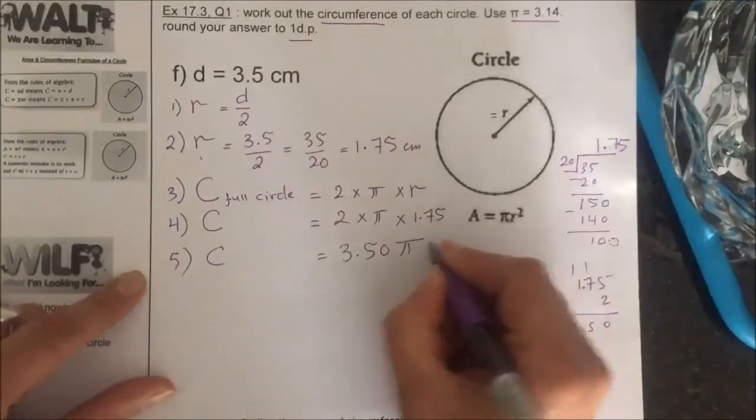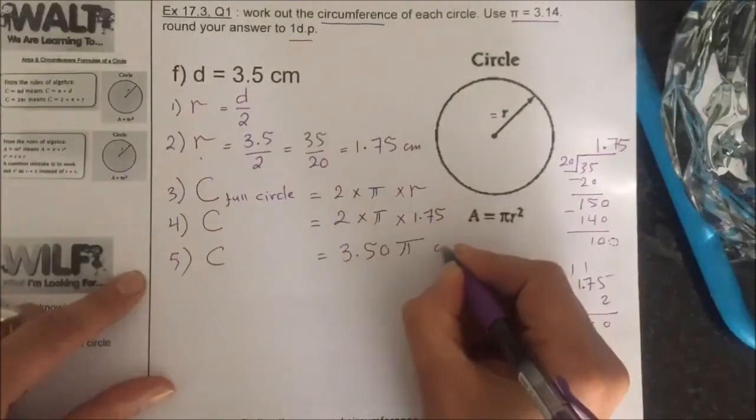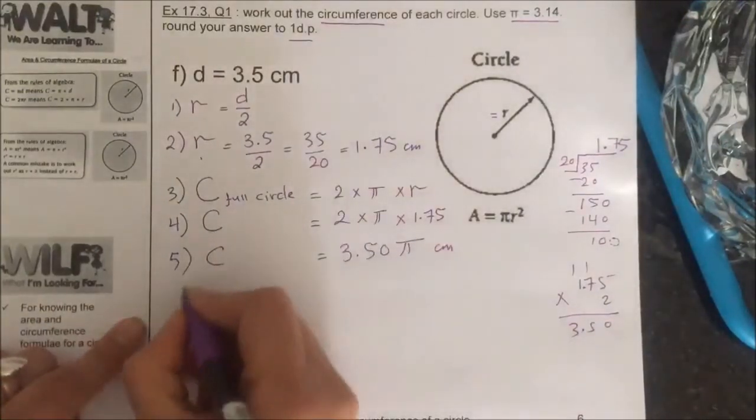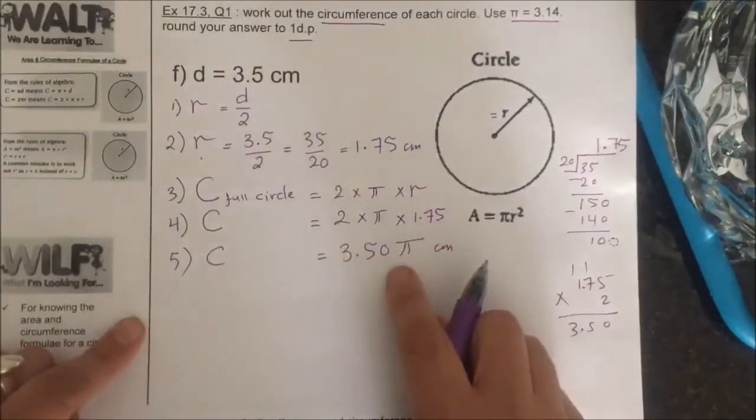And the length is in centimeter, not centimeter squared. This is the length of the arc. Now, this is the answer in terms of pi.